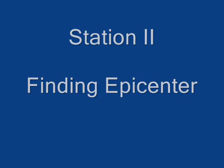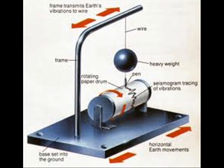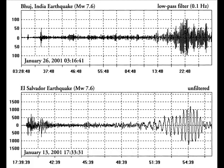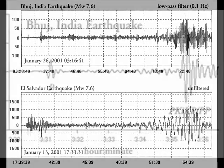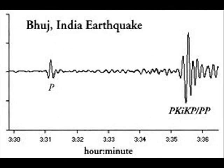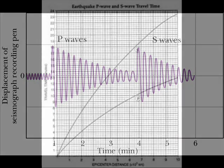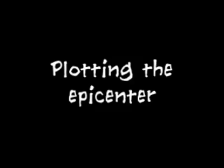Station 2 is finding epicenters. Seismometers detect vibrations within the Earth, and the vibrations are recorded on a seismogram. By determining the length of time between when you first feel P waves and when you first feel S waves, you're able to determine distance to the epicenter. Take that difference in time, go to your time travel graph from your reference tables, match up that distance along the Y axis, put that between the S and P lines, read down to distance, and then you can plot your epicenter.